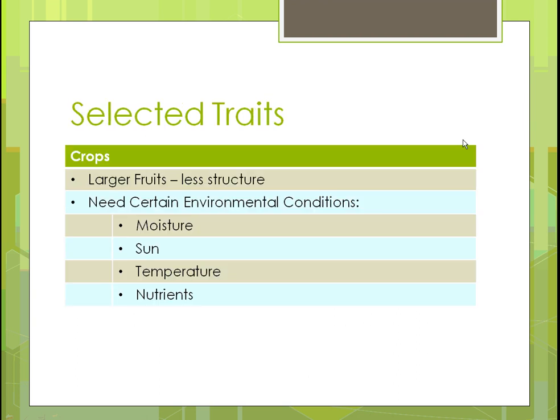Looking at different traits in crops, we have larger fruits but with less structure to them. Specific environmental conditions are needed for crops to grow — a certain amount of moisture and sun, temperatures within a certain range, and appropriate nutrients in the ground. What we've arrived at is that all nutrients are now added artificially; we're adding synthetic products to the ground because the right amounts aren't naturally there anymore.